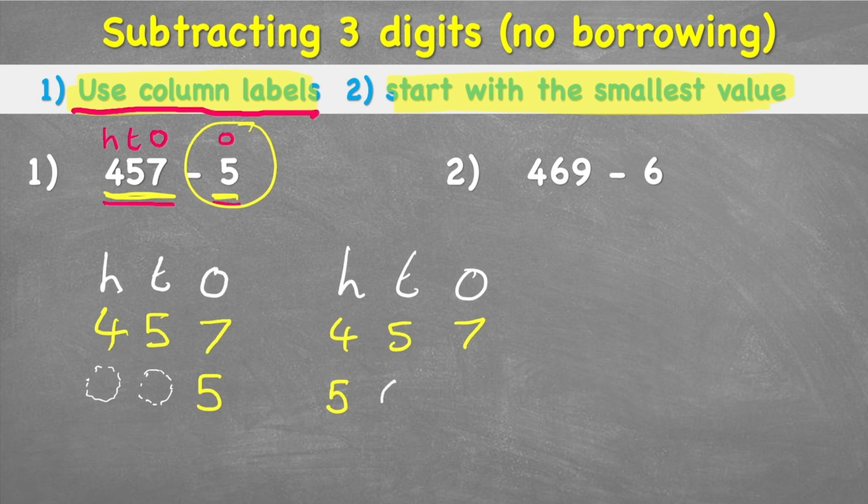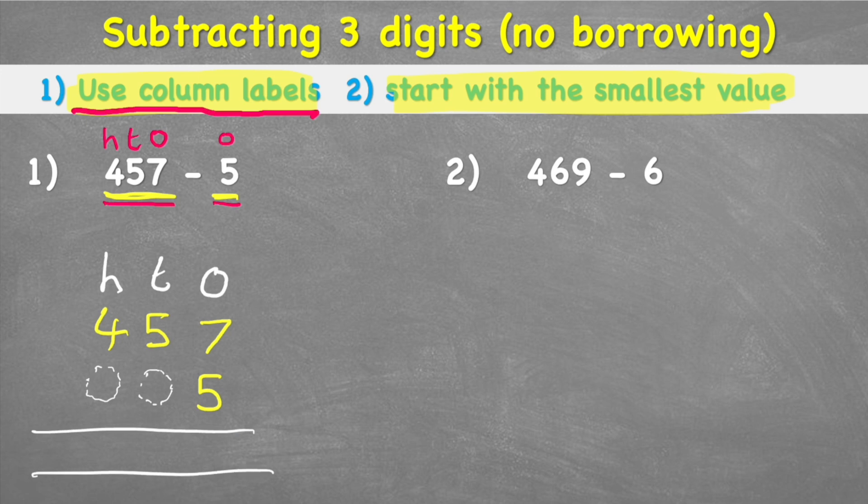Uh-oh, what happens when we put our placeholder? That's right, we've turned that five into a 500 because we put it in the hundreds column. So we know that is incorrect, but a lot of people make that mistake because they don't put these titles above their columns. So now we're ready to begin and we can put our equals line and our subtraction sign so that we remember we're doing subtraction.